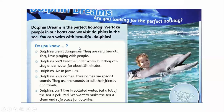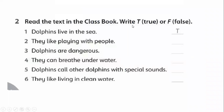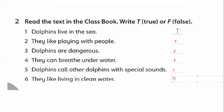Let us continue to the questions. Read the text and write true or false. Number one — dolphins live in the sea: true. Number two — they like playing with people: true. Number three — dolphins are dangerous: false, dolphins are safe. Number four — they can breathe underwater: false, dolphins cannot breathe underwater. Number five — dolphins call other dolphins with special sounds: true. Number six — they like living in clean water: true.